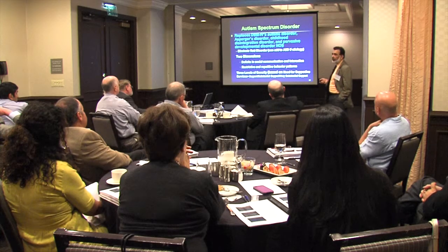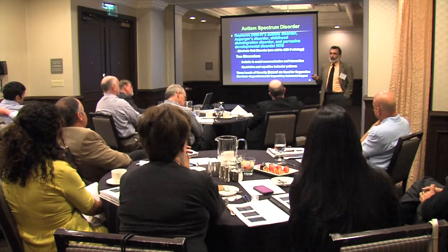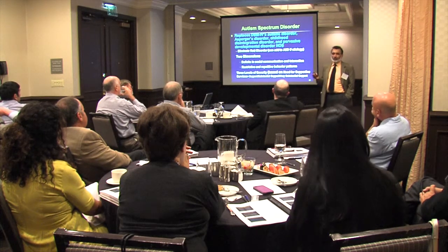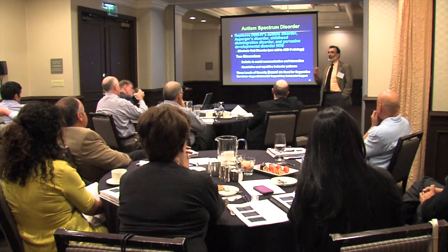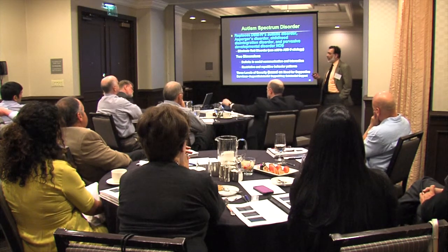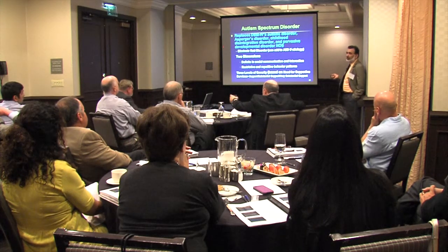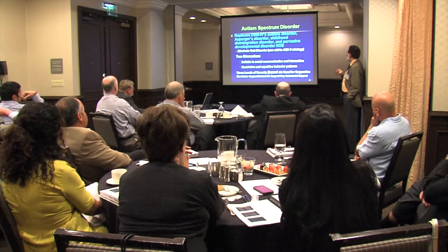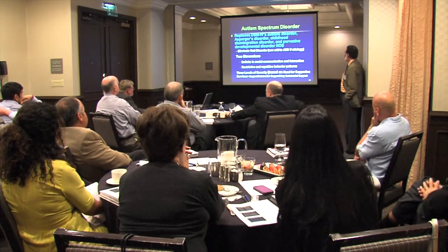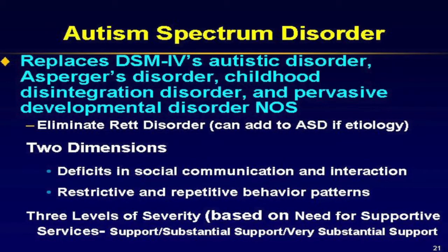Why was this change made? Two major reasons. First, data do not suggest clear distinctions between these disorders — there's no categorical separation between them, and it causes clinical confusion. That was the principal reason for developing the entity of Autism Spectrum Disorder instead of four separate disorders. There are two domains: deficits in social communication and interaction, and a second domain of restrictive and repetitive behavior patterns.